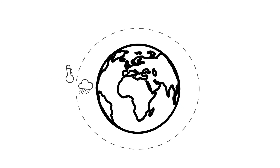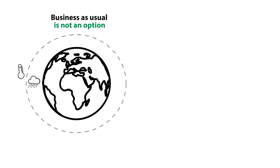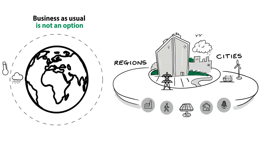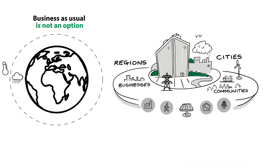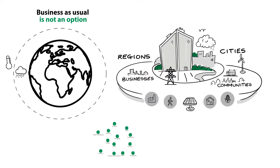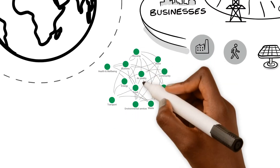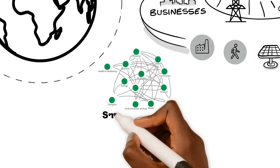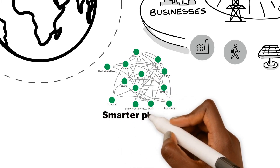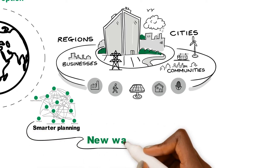Climate change, resource scarcity and poverty are increasingly costly. Business as usual is not an option. How can nations, regions, cities, businesses and communities face these challenges and find the opportunities? By considering the interconnected and complex nature of the decisions we make, we can be smarter about planning for our future. We won't meet today's challenges with yesterday's thinking.